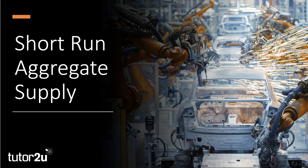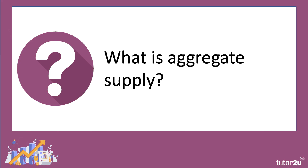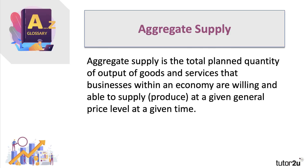Welcome to a series of short videos on macroeconomics focusing on aggregate supply. In this revision video we'll spend a few minutes thinking about some of the key factors affecting aggregate supply for goods and services in the macro economy. Aggregate supply is defined as the total planned quantity or volume of output of goods and services that businesses within the economy are both willing and able to supply.